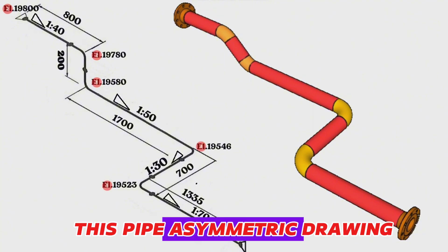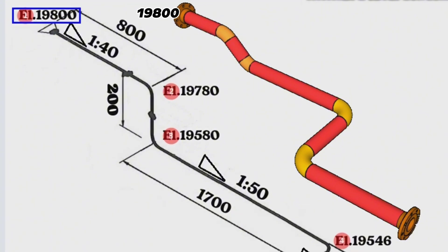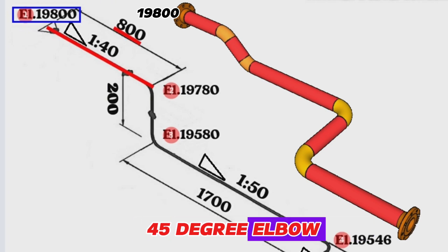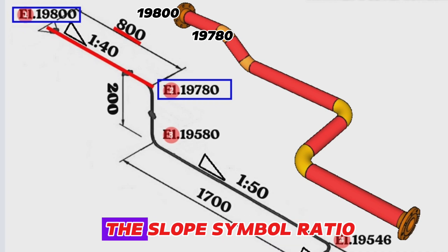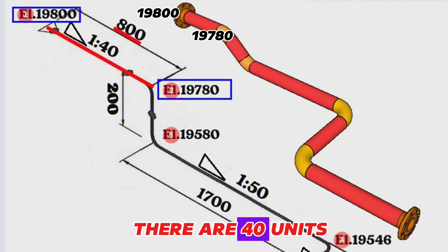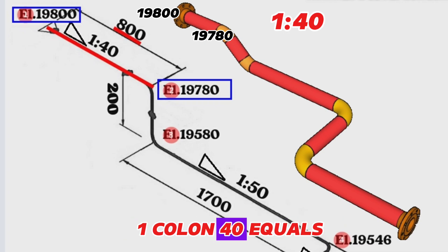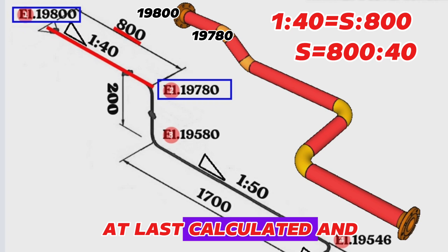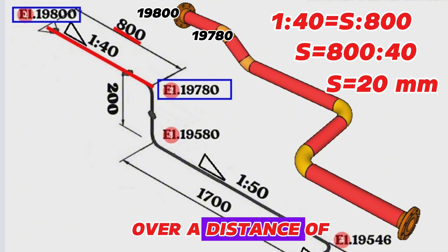Let's start reading this pipe isometric drawing from the first flange. The pipeline starting point elevation height is 19,800 millimeters. The pipeline extends 800 millimeters southward and then turns downward at a 45-degree elbow. The elevation of the pipeline turn point is 19,780 millimeters. The slope symbol ratio in this part of the pipeline is 1:40, meaning that for every 1 unit of vertical elevation there are 40 units of horizontal distance. We calculate: 1:40 = S/800, so S = 800 ÷ 40 = 20 millimeters.